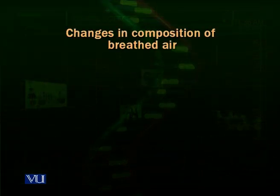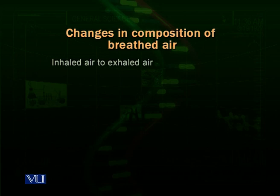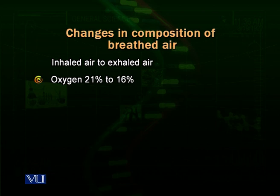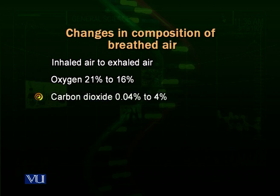Now, changes in the composition of breathed air: when we breathe air in and then it is expelled out, what is the difference between inhaled air and exhaled air? Air entering the lungs is 21 percent saturated with oxygen; when it goes out, it is 16 percent saturated — a 4 percent decrease. Carbon dioxide is 0.04 percent in inhaled air, but when air goes out, it is 4 percent saturated with carbon dioxide.